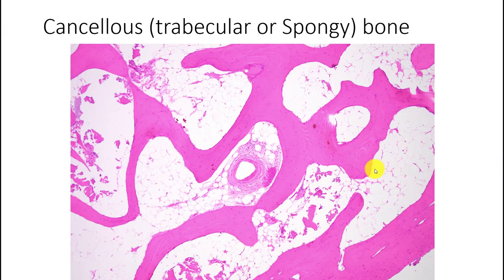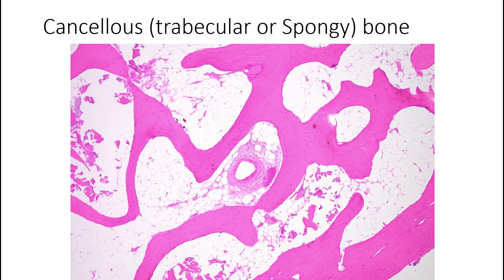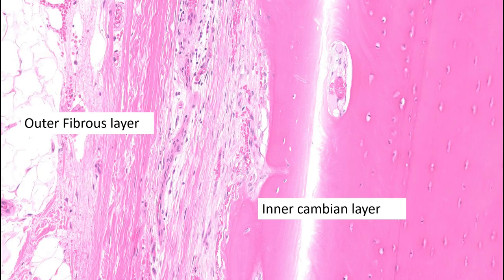If you measure up all the inner surfaces of the trabecular cancellous bone, it would fill three football fields — the American version of football. Now let's talk a little bit about the periosteum, which is on the surface of all bones and is generally not very prominent in the normal state.